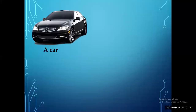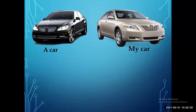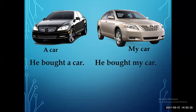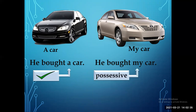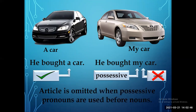Rule 2: Consider 'He bought a car' and 'He bought my car.' In the first sentence, article 'a' is used before 'car.' But in the second sentence, no article is used before 'car' because 'my' is a possessive pronoun. Article is omitted when possessive pronouns are used before nouns.